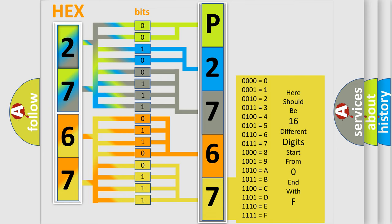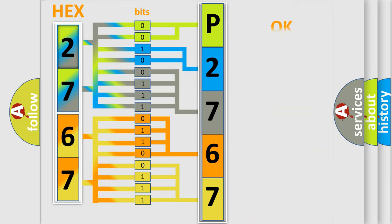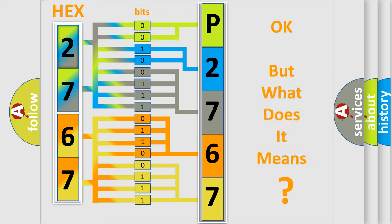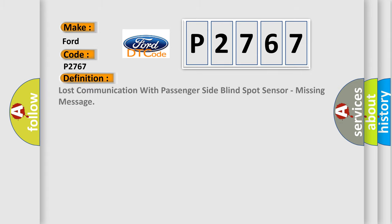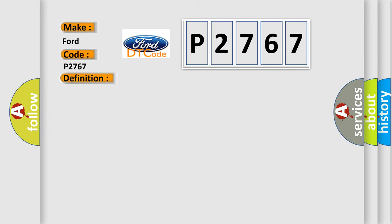A single byte conceals 256 possible combinations. We now know in what way the diagnostic tool translates the received information into a more comprehensible format. The number itself does not make sense to us if we cannot assign information about what it actually expresses. So, what does the diagnostic trouble code P2767 interpret specifically for Infiniti car manufacturers? The basic definition is: Lost communication with passenger side blind spot sensor — missing message.